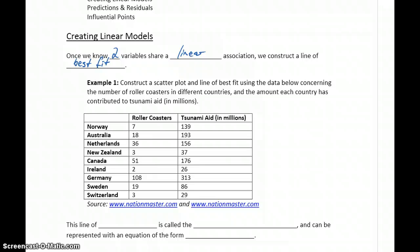So in our first example, we're given some data on roller coasters and the amount contributed to tsunami aid for different countries. We want to construct a scatter plot and add to that a line of best fit.